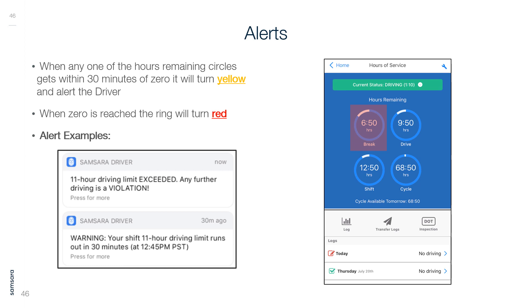Alerts: When any one of the hours remaining circles gets within 30 minutes of zero, it will turn yellow and alert the driver. When zero is reached, the ring will turn red. Below are some alert examples.